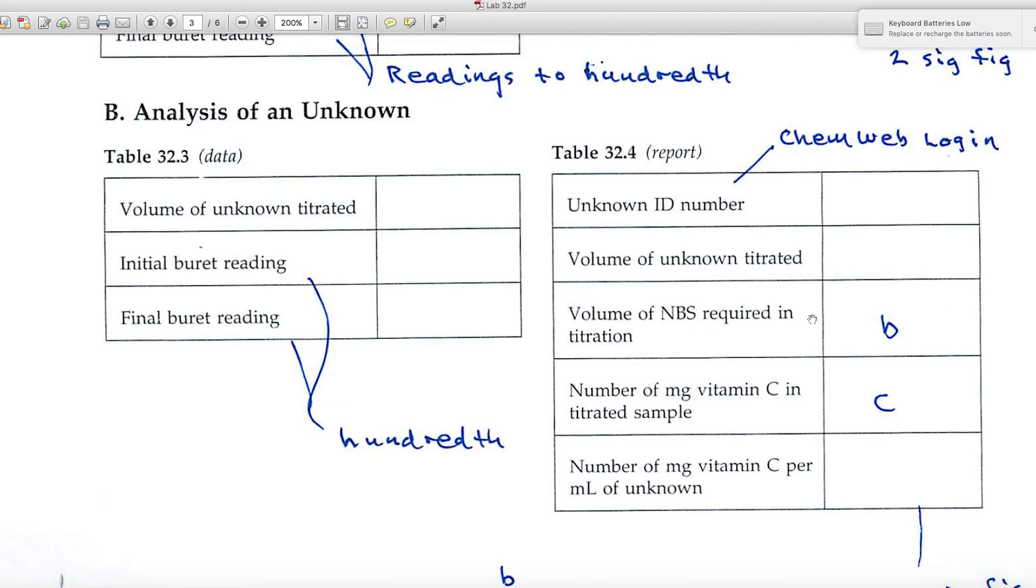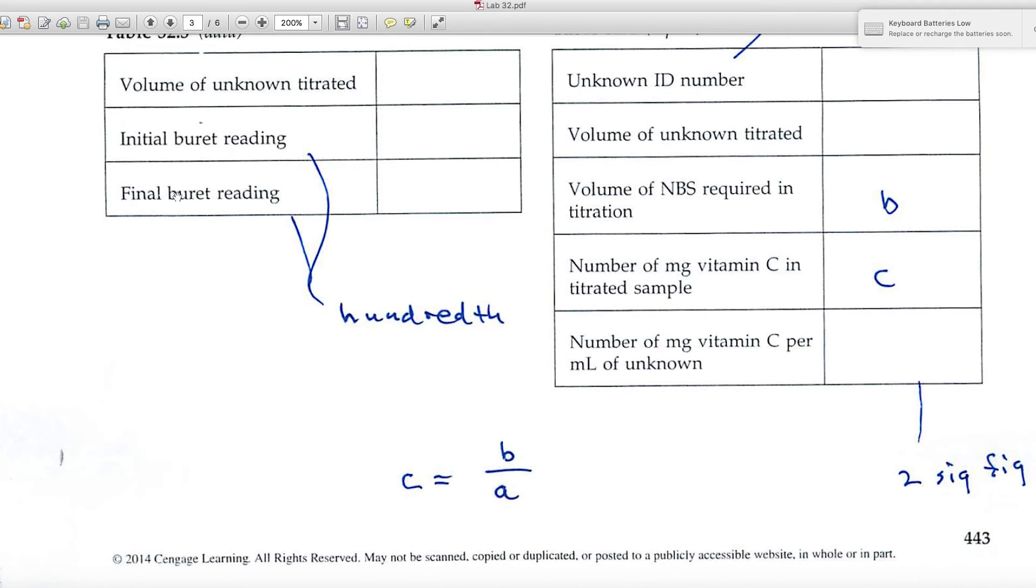The volume of NBS required in the titration, well you'll get that by the difference in these two burette readings. I've labeled it 'b'. The number of milligrams of vitamin C in the titrated sample I've labeled 'c'. And it won't be hard for you to calculate those two values, but I've labeled them so that I can give you a little equation here.